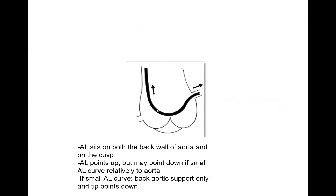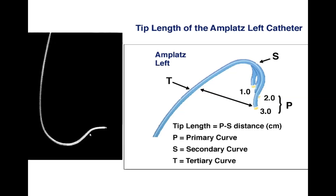That big secondary curve is meant to provide support by sitting over the aortic valve cusps as well as by abutting the opposite aortic wall, so it provides a lot of support — that's why we use it in difficult interventions. M-Plex Left can also be used for the right coronary, usually with a shorter tip like 0.75 or 1 centimeter, versus the left coronary where we use M-Plex Left 2 typically.